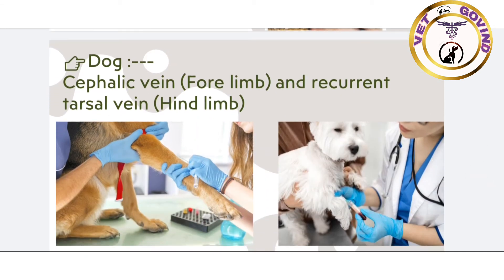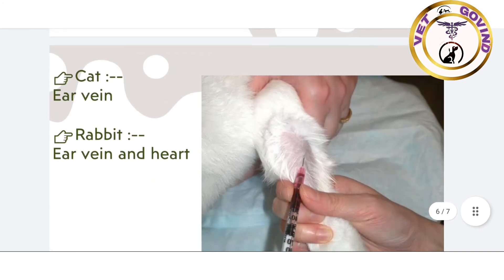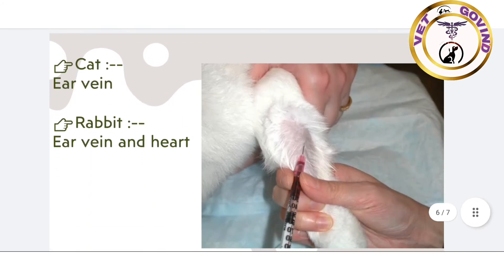In dog, the site of blood collection is from the cephalic vein of the forelimbs and the recurrent tarsal vein from the hind limbs.